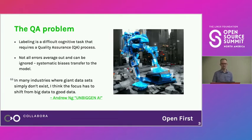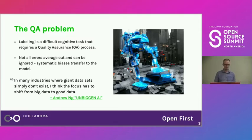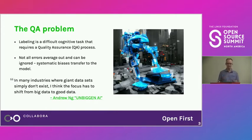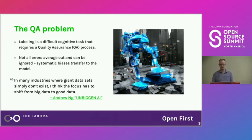You cannot just label data and assume it's going to be okay. And contrary to a lot of research you can find, not all errors average out and can be ignored. If you have systematic errors in your data, these biases will transfer to your model, and it will make the same errors that were in your dataset.